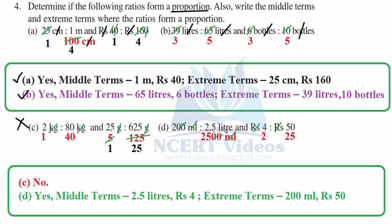Part d: Units are different — convert 2.5 liters to milliliters. 2.5 liters means 2 complete liters and half a liter, so 2500 milliliters (2000 + 500). Milliliters cancel and two zeros cancel giving 2 is to 25. Rupees cancel: 2 to 4 and 25 to 50 — ratios are equal, therefore in proportion. Middle terms are 2.5 liters and rupees 4; extreme terms are 200 milliliters and rupees 50. This was question number four.